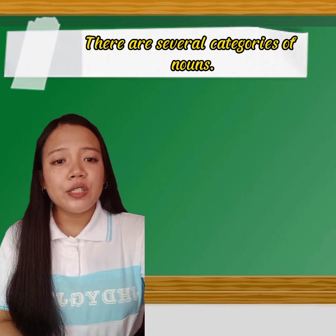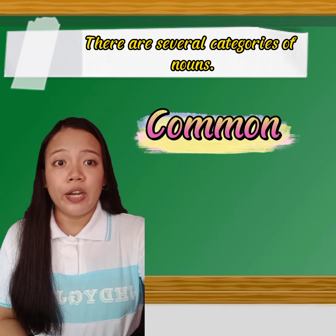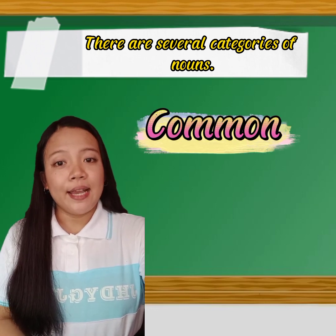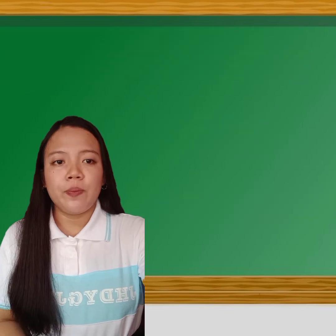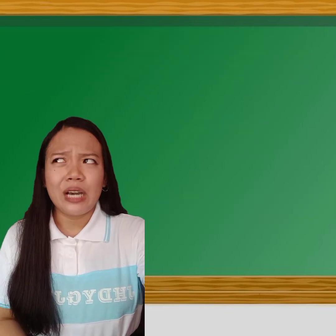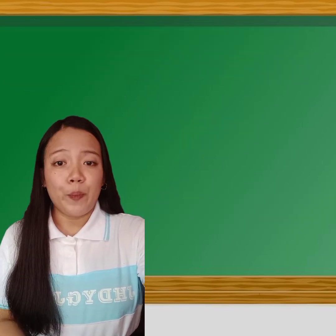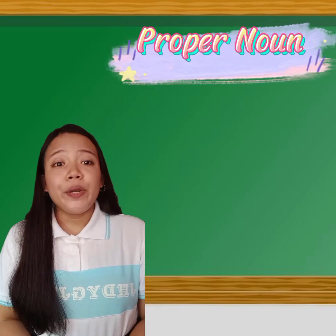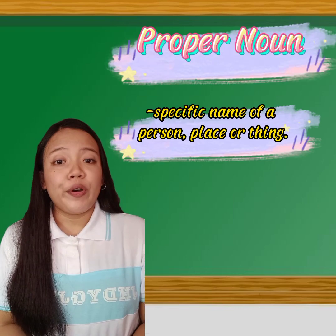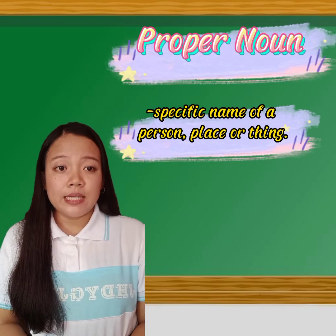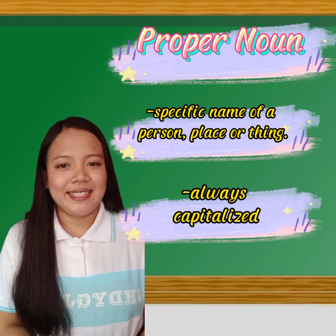There are several categories of nouns. For example, there are common and proper nouns. One important distinction to be made is whether a noun is a common or a proper noun. A proper noun is a specific name of a person, place, or thing and is always capitalized.